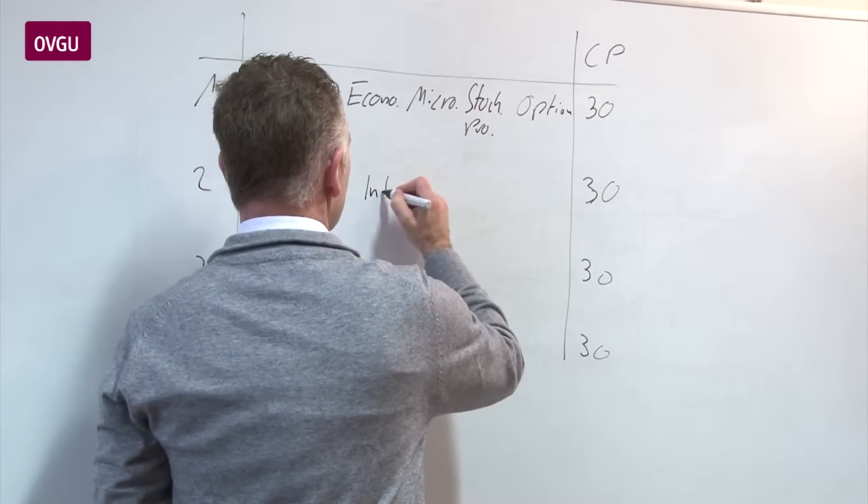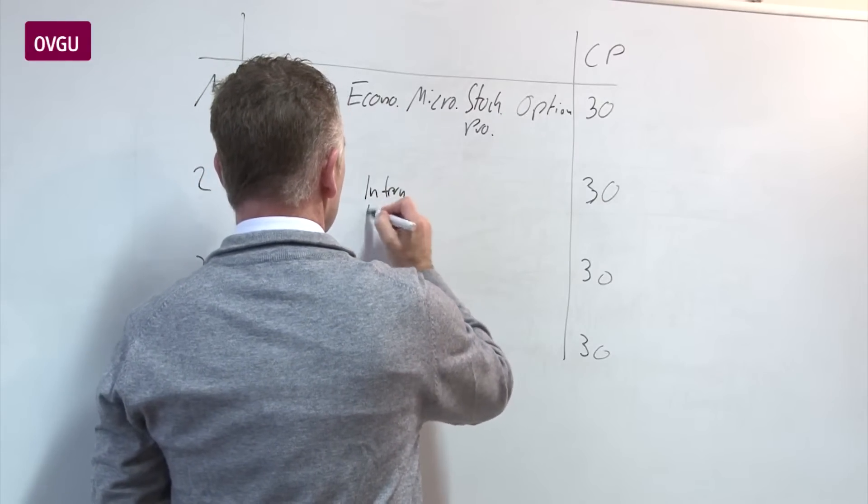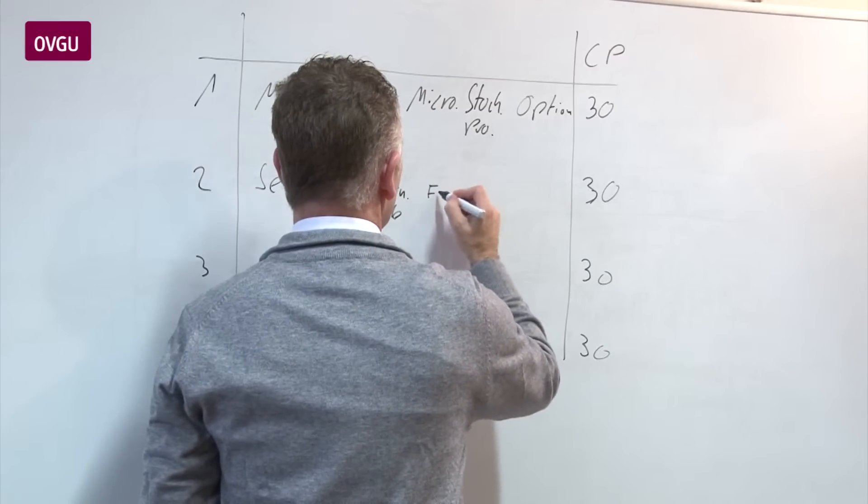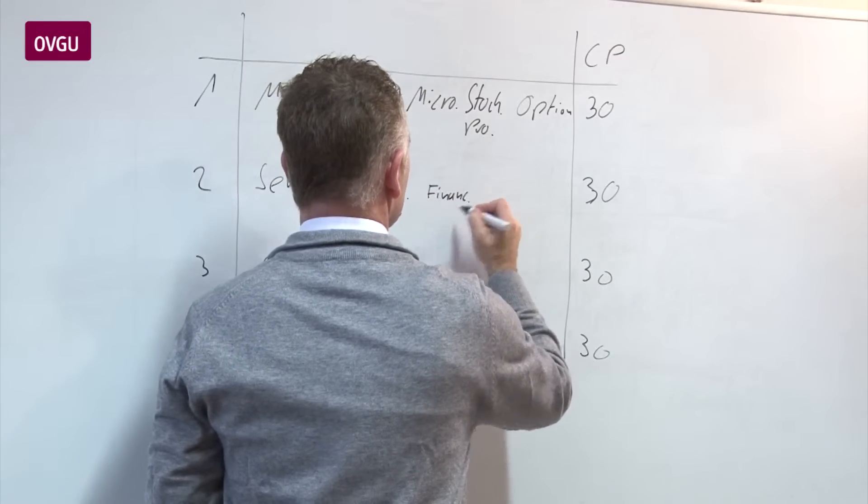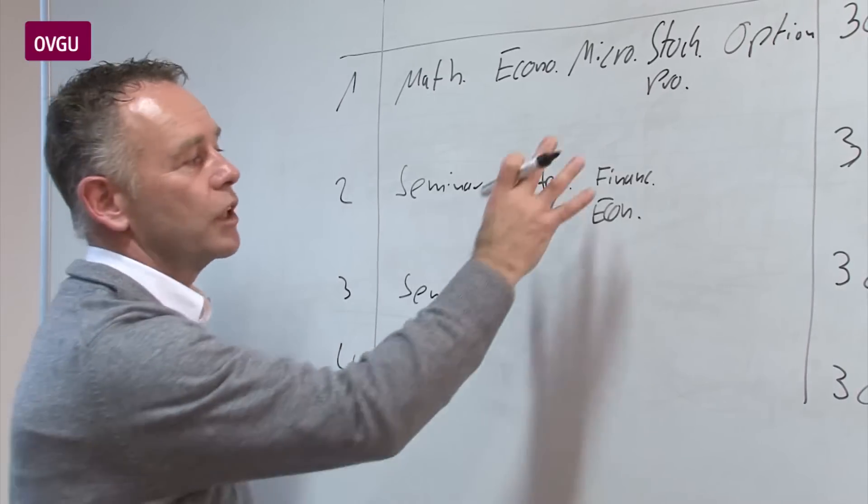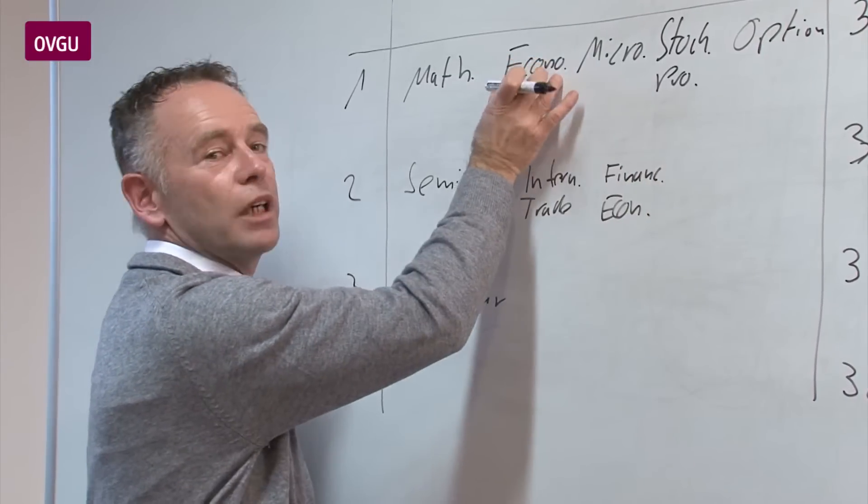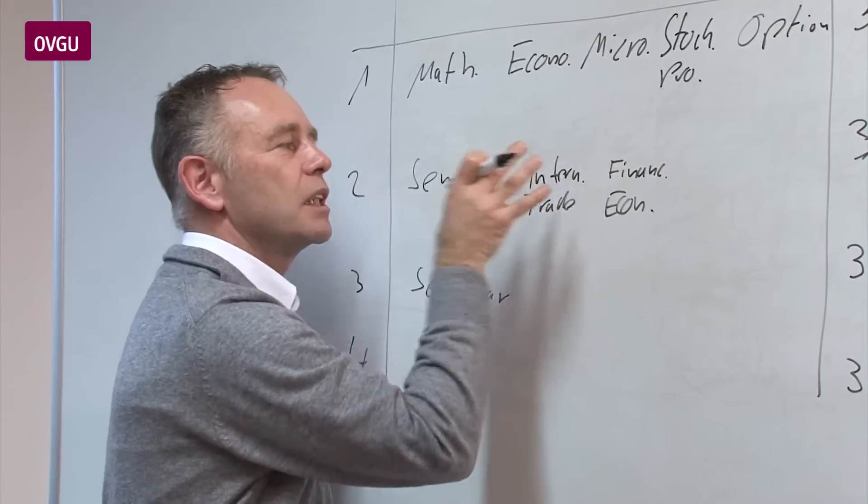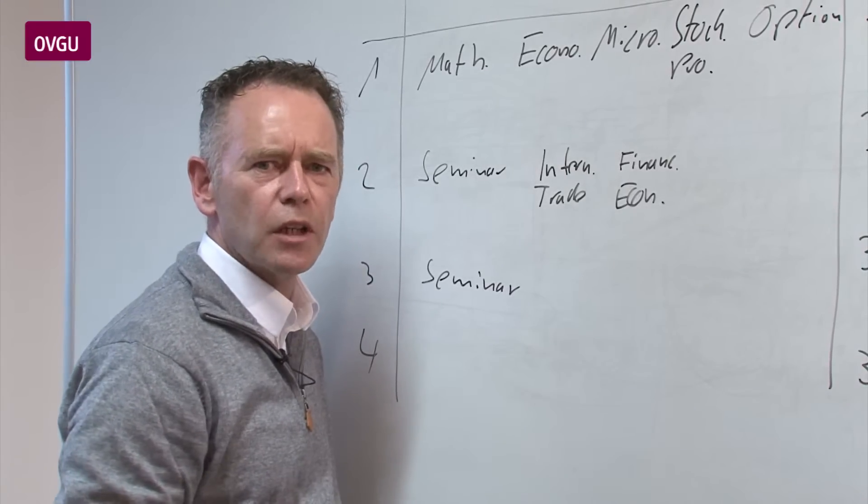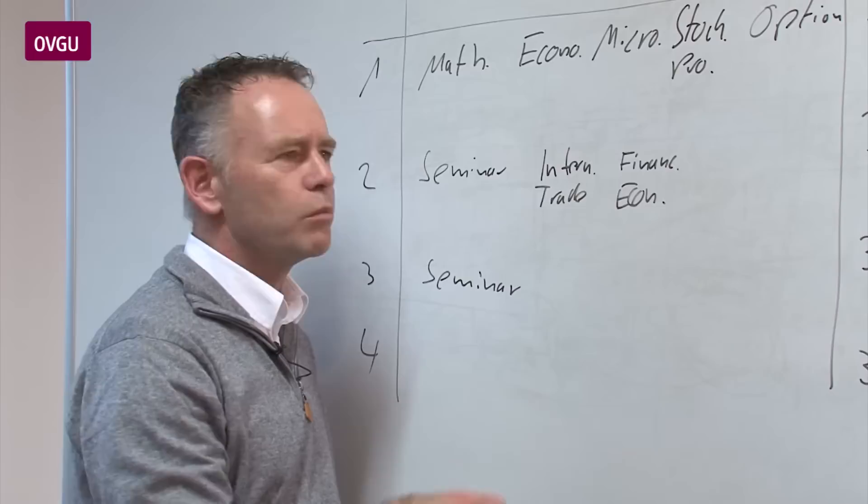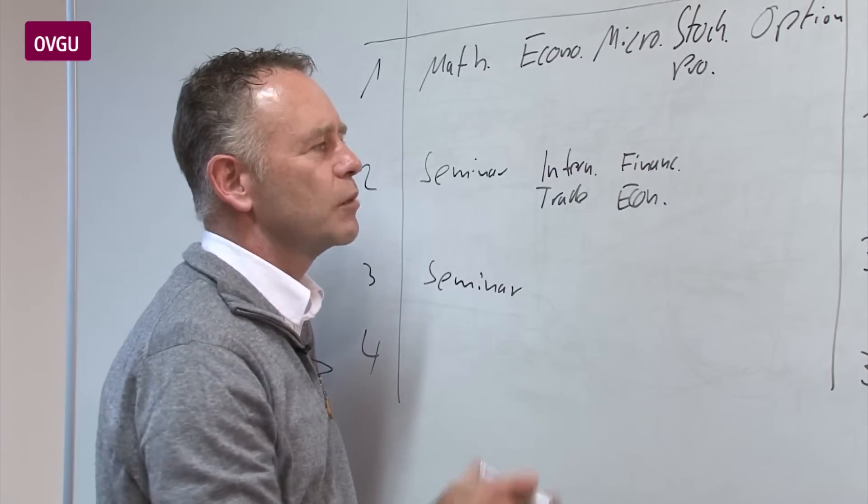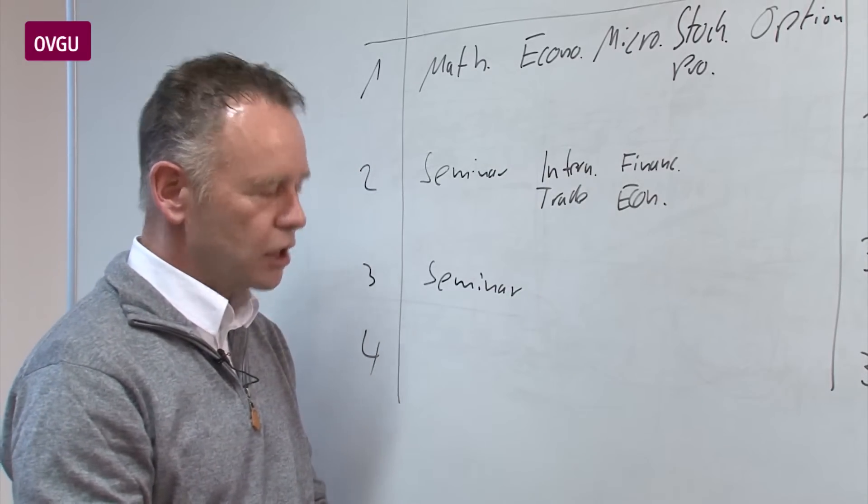We have international trade also in the second semester and financial econometrics in the second semester. So financial econometrics is based, of course, on econometrics but has a special finance focus. So we talk about what happens at the capital market and what about the price movement, can we say or can we have probabilities that prices go up and down and things like that.